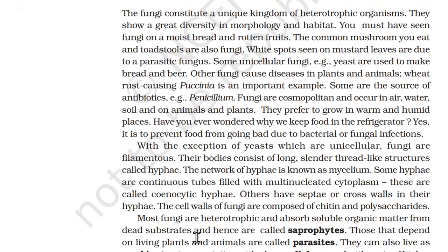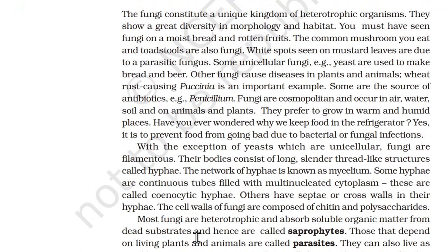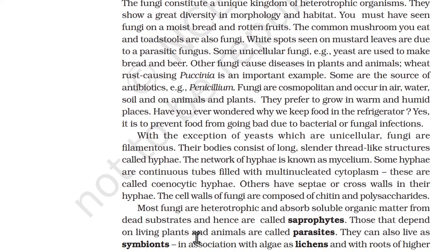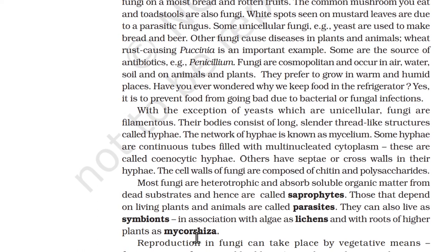2.3 Kingdom Fungi. Fungi constitute a unique kingdom of heterotrophic organisms. They show great variety in morphology and habitat. Common examples include fungi on moist bread and rotten fruit, mushrooms, toadstools, and white spots seen on mustard leaves due to parasitic fungus. Some unicellular fungi like yeast are used to make bread and beer. Other fungi cause diseases in plants and animals — wheat rust caused by Puccinia is an important example. Some are sources of antibiotics, for example, penicillin. Fungi prefer to grow in warm and humid places.